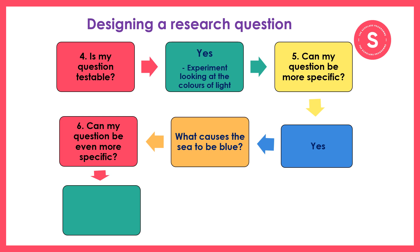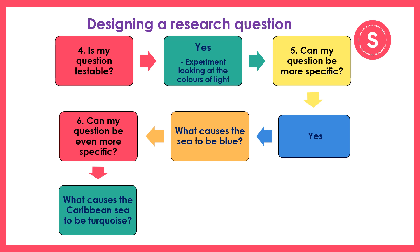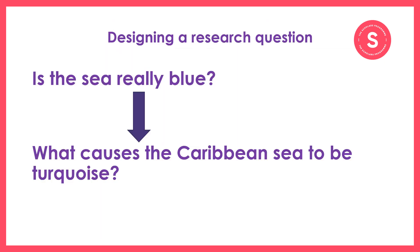I'm going to ask myself again: can I be even more specific? I'm going to look at each word of my question to see if I can narrow each word down. There are many seas, so I'll narrow down to one sea. And there are many shades of blue, so I'll narrow down to one shade. Now my question is: 'What causes the Caribbean Sea to be turquoise?' By using the flowchart to ask lots of questions and follow the guidelines, my research question has changed from 'Is the sea really blue?' to a better research question: 'What causes the Caribbean Sea to be turquoise?' This question requires a more complex answer, is much more narrow and focused, and is one that is more easily testable.